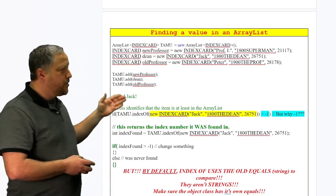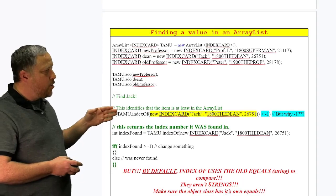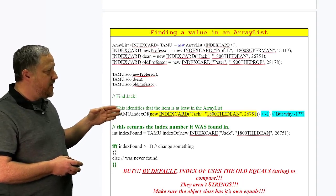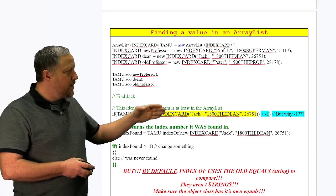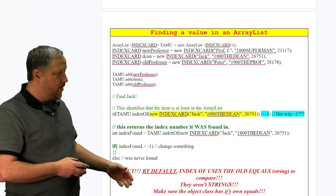Now, what I'm trying to do is I'm trying to find Jack. So I'm going to go in the ArrayList of TAMU, IndexOf, and New IndexCard of Jack, and it should be the exact same data between all that.